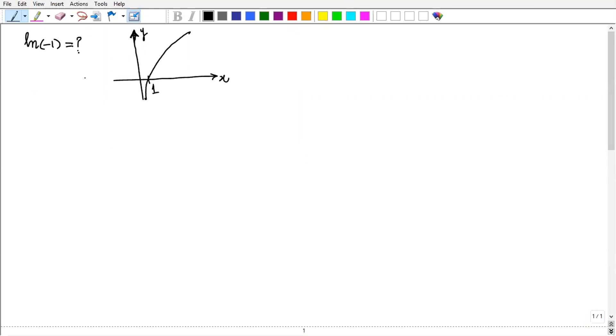We know that log always takes positive values of x. That's the graph of log. Log 1 is 0 and it can only take positive values of x. But what happens if we put minus 1 here?